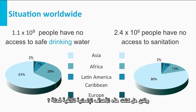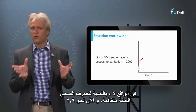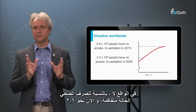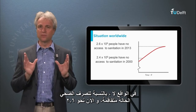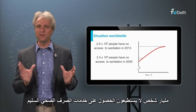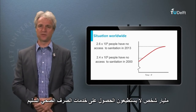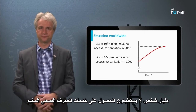But were these MDG agreements effective on this? Well, no. In fact, with regard to sanitation, the situation aggravated, and now some 2.6 billion people have no access to proper sanitation. A shame.